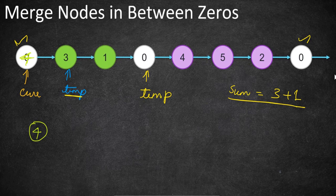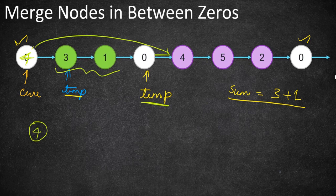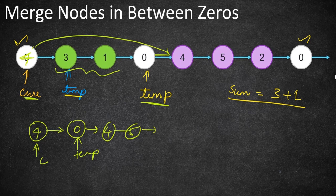Now we give the connection from current directly to temp, skipping the merged intermediate nodes since we no longer need them. So we set current.next equal to temp. Now current is four and temp is at the next zero. We then move both pointers forward: current moves to that zero, and temp moves to the next non-zero node, so it can iterate and calculate the next sum.